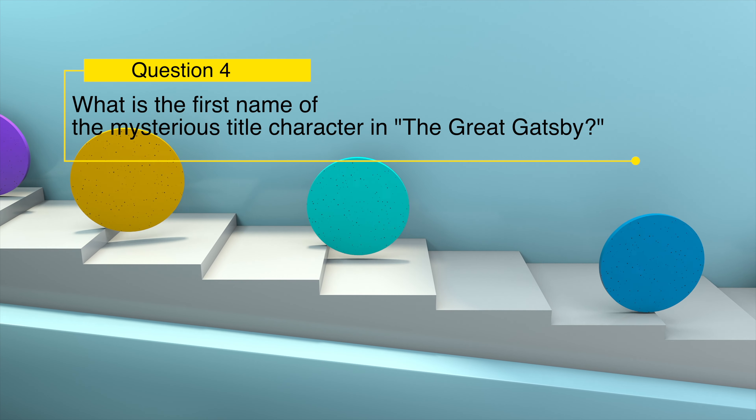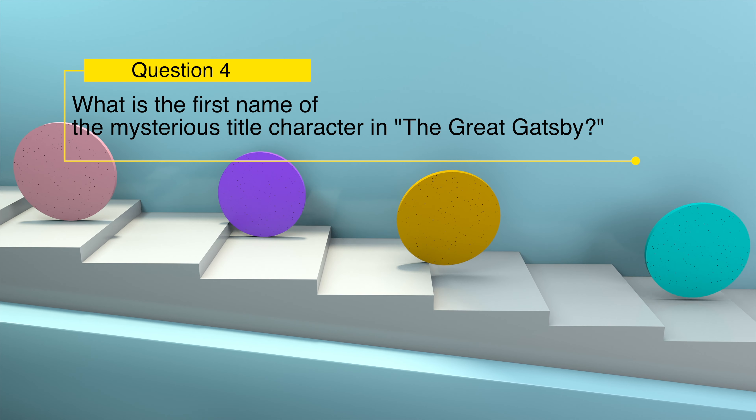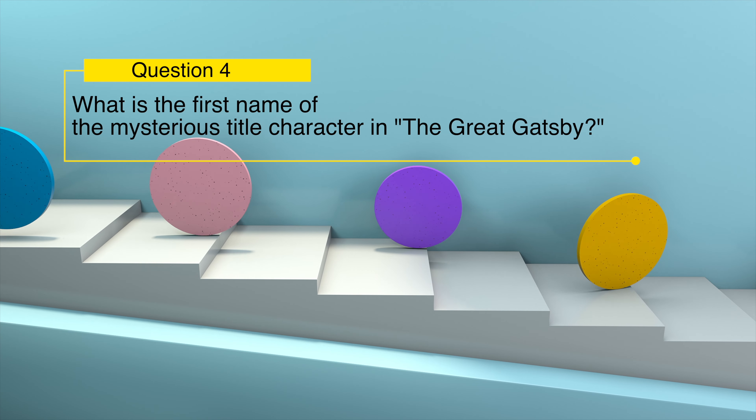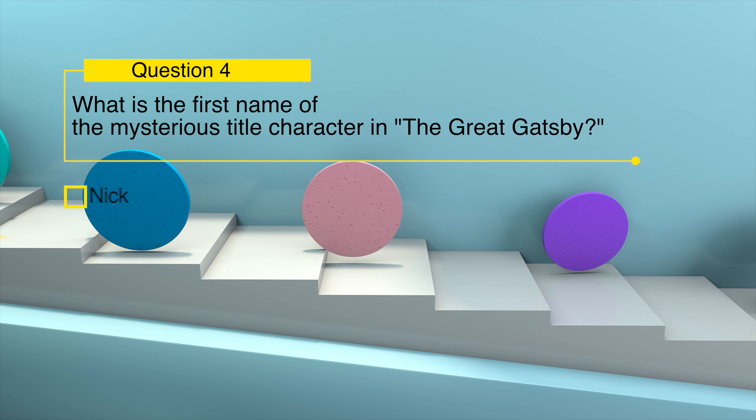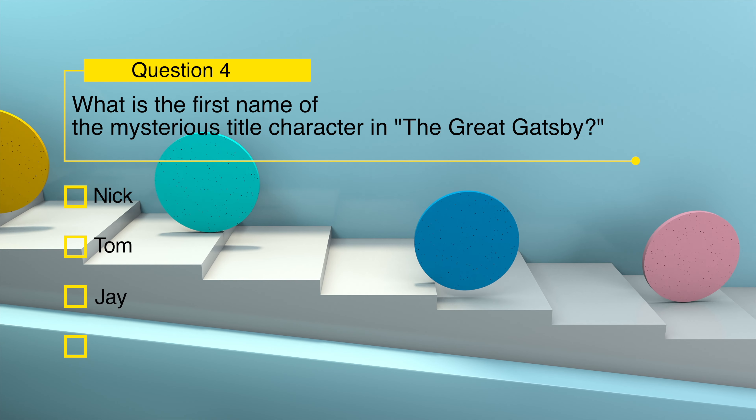What is the first name of the mysterious title character in The Great Gatsby? Nick, Tom, Jay, or Tim?